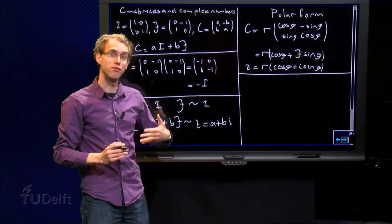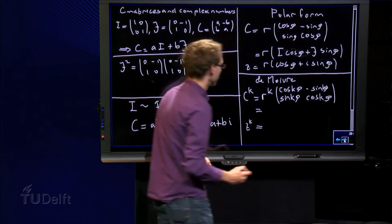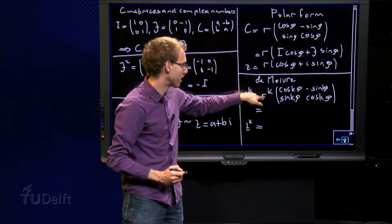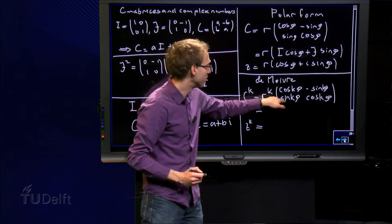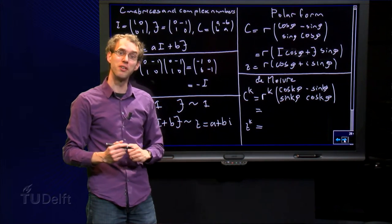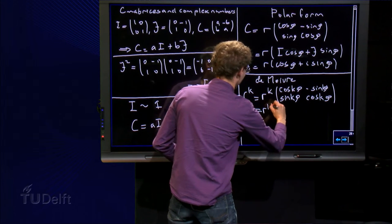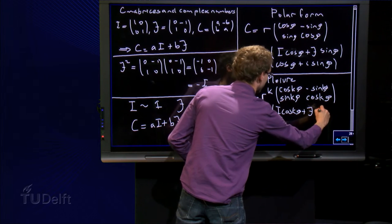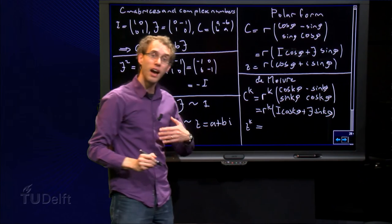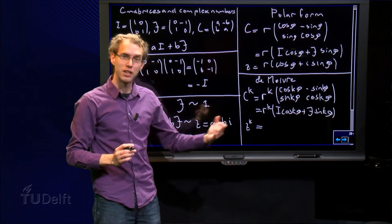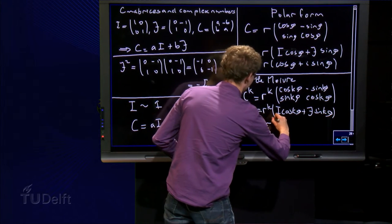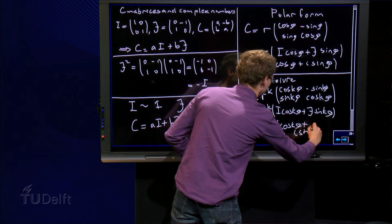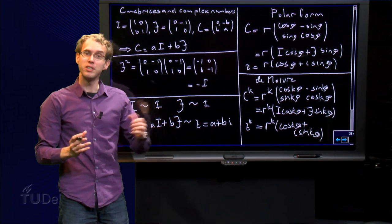And now we see also that the formula of De Moivre are actually the same. So if we look at the formula of De Moivre, for high powers of the C matrix, I took C to the power k equals R to the power k and I needed cos kφ over there, sin kφ and minus sin kφ over there. If we write this in terms of I and J, we find this equals R to the power k, I matrix times cos kφ plus J matrix times sin kφ.